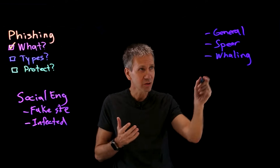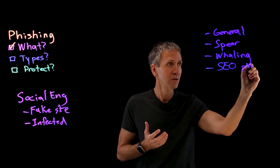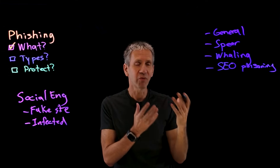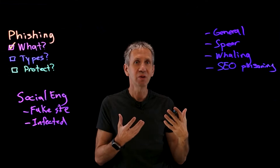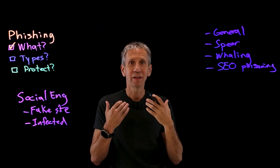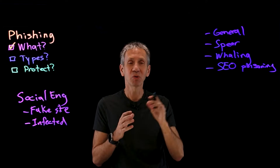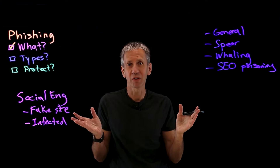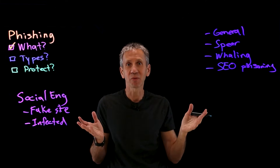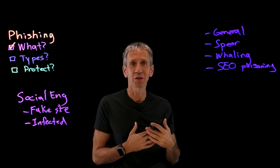There are other techniques phishers use as well. SEO poisoning is one example, where the attacker puts up a fake website and does enough to trick the search engine into listing it high in search results. People doing a normal search see it in the top results, click on it while trying to reach their bank, and end up on a fake site — no email required.